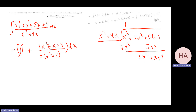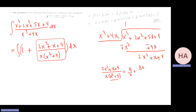So I decompose (2x squared + x + 4) over x(x squared + 4) as A over x plus (Bx + C) over (x squared + 4), since the quadratic is irreducible. That gives A(x squared + 4) plus x(Bx + C) over x(x squared + 4), which expands to Ax squared + 4A + Bx squared + Cx.